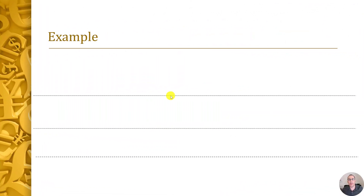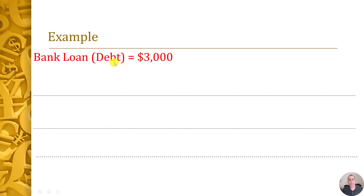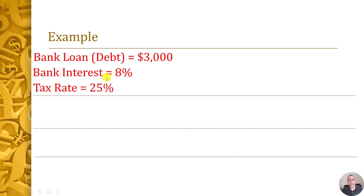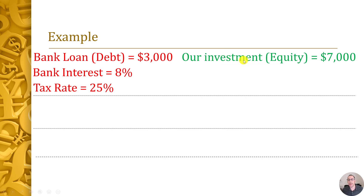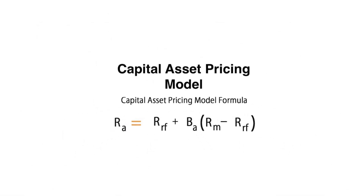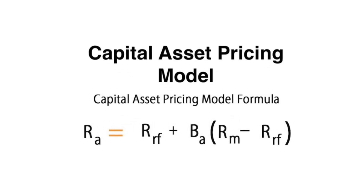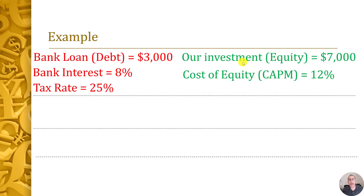Let's go through an example. We start a company and take a $3,000 bank loan at an 8% interest rate, with a 25% tax rate. We also invest $7,000 of our own money, so our equity is $7,000. The cost of equity is 12% — you can use the Capital Asset Pricing Model for a public company, but 12% is a conservative number we'll use here.